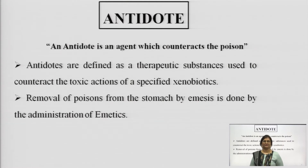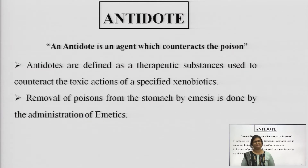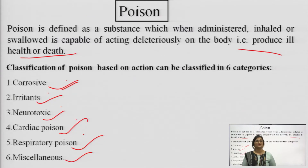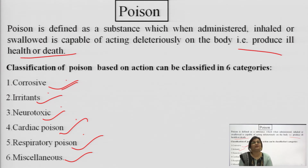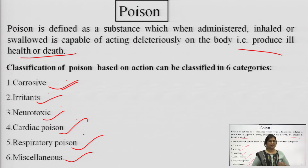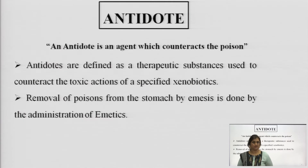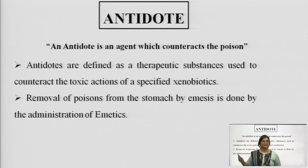Moving on towards antidote. Poison is defined as any substance which when administered, inhaled, or swallowed leads to a deleterious effect towards our body — unwanted deleterious effect. So in order to combat this poison, antidotes are available.